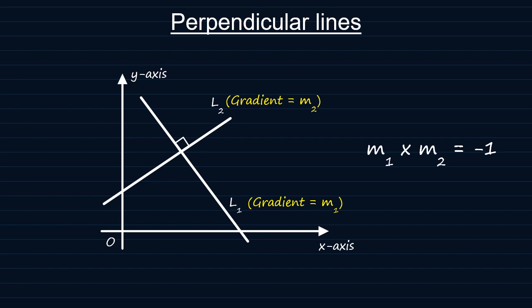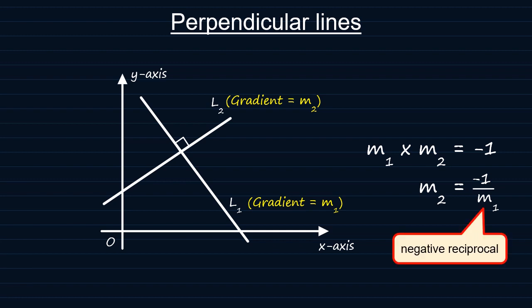Now, since M1 times M2 is equal to minus 1, it should also follow that M2 is equal to minus 1 over M1. That is, M2 is the negative reciprocal of M1.